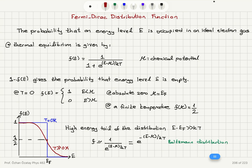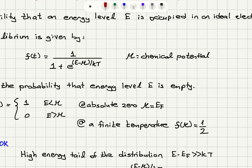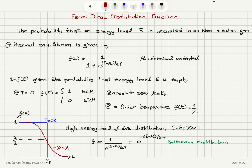The value of the chemical potential μ at absolute zero is the Fermi level. At a finite temperature, if you substitute E = μ, you get e^0, so 1 over (1 + 1) gives us 1/2. So when the energy equals the chemical potential, the probability of occupancy equals 1/2.